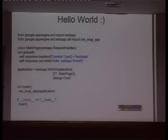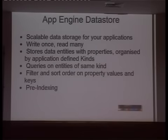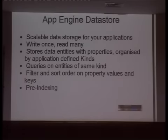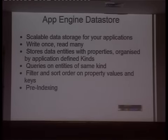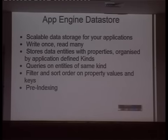App Engine Data Store is scalable data storage. The basic philosophy is write once, read many. It's schema-less entities stored in the data store, arranged by properties organized by application-defined kinds. For any entity in the data store, there has to be a kind associated with it. We can have queries on entities of the same kind — this is very important — you cannot have queries on entities of different kinds. In relational database terms, joins are completely non-supported in App Engine. We can filter and sort properties on property values and keys, and there is pre-indexing.